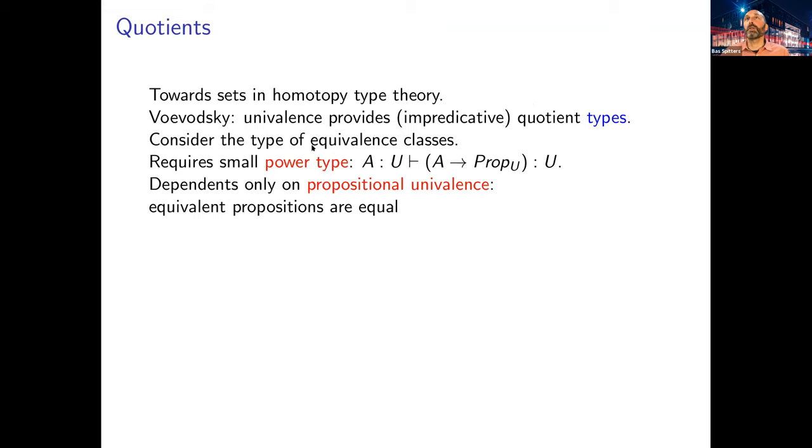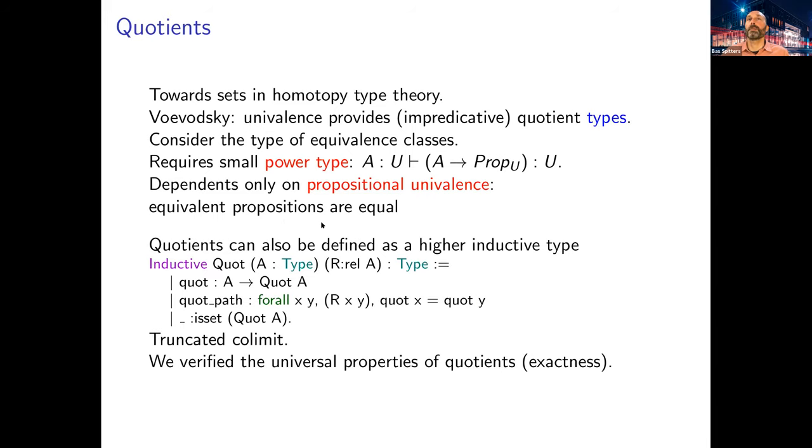So now we want to see what properties the sets actually have in homotopy type theory. Much of what I'm saying here is in chapter 10 of the book and also in the paper with Egbert Rijke. What's key is that Voevodsky used univalence to provide impredicative quotients. You take the usual construction in set theory where you make the quotient by taking the type of all equivalence classes, but this requires the power type. You want the power type to be small, but this cannot be done. So here you need this resizing axiom. This also depends on propositional univalence.